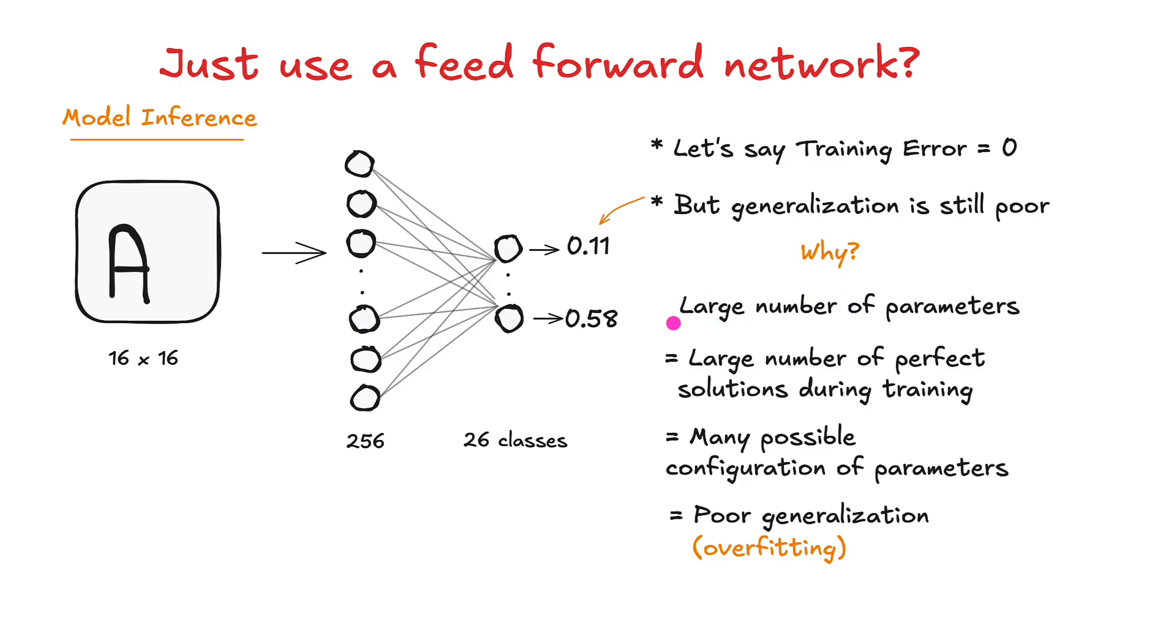Well this network is characterized by a large number of parameters. We have 256 times 26, whatever a few thousand that may be. Now a large number of perfect solutions thus exists during training. So because training error is 0 there may be many possible configurations of these parameters that yield this 0 error training. And so every time you were to probably train this network you might get a different model altogether. And so you get very different types of predictions for the same input on different iterations of training. And this can overall lead to very poor generalization results. And a lot of this is mostly because this model has kind of memorized what the training data is. And in this case it just might be averaging what the training data is. And this is a classical case of overfitting.